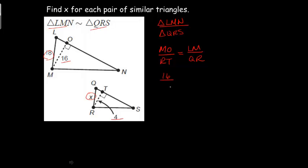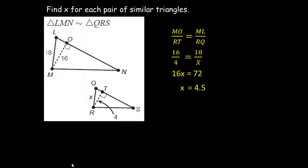Now I'm going to plug in my numbers. MO is 16, RT is 4, and LM is 18, and QR is x. So do my cross multiplying, 18 times 4, that's 72. I'm going to divide both sides by 16 so I can get x all by itself. That's the only way I'm going to find him. 72 divided by 16 is going to give me 4.5. So that's my big answer right there.